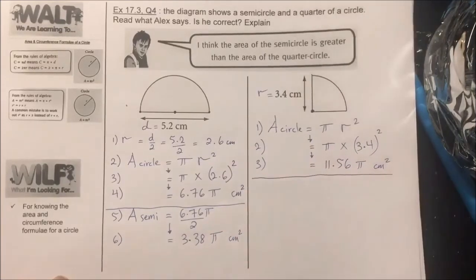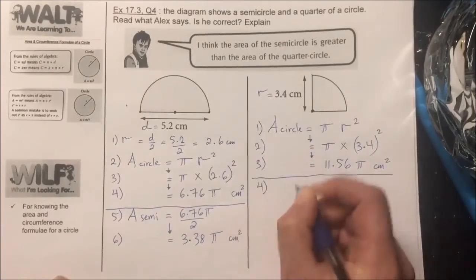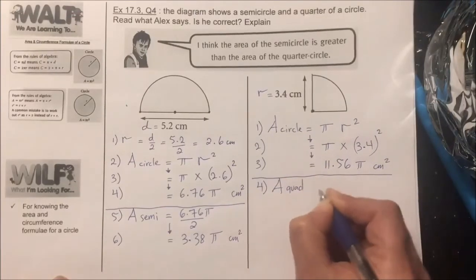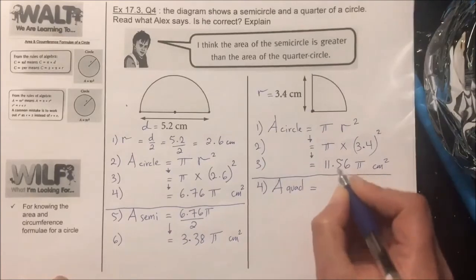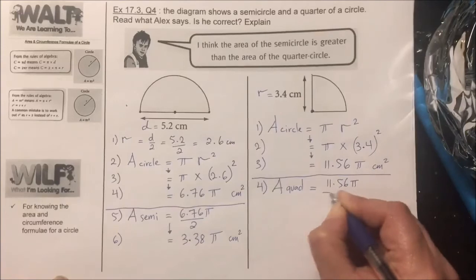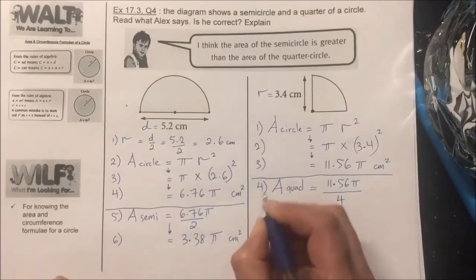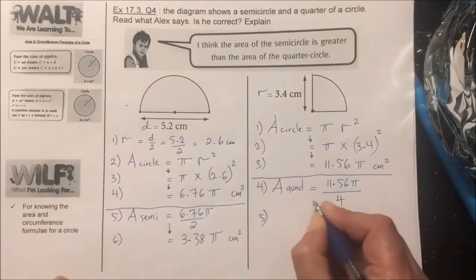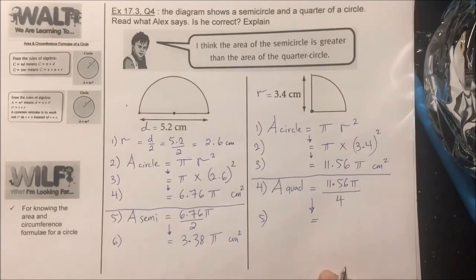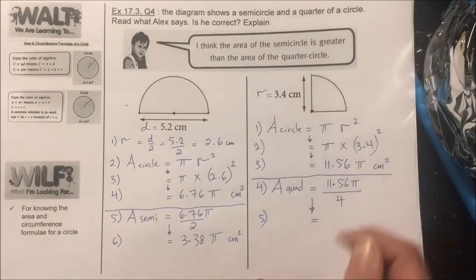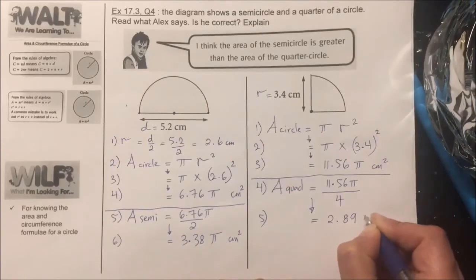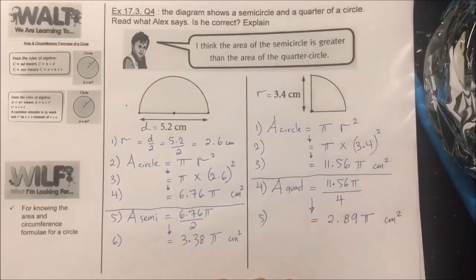In step four, I calculate the area of the quadrant by dividing the area of the full circle by four. The final answer, left in terms of pi, is 2.89π cm².